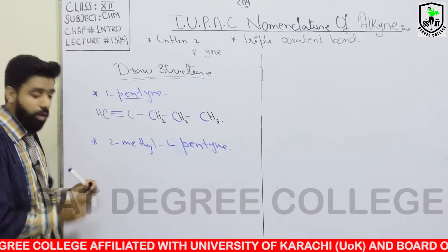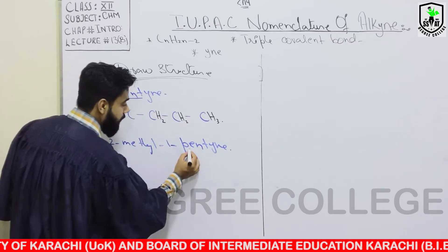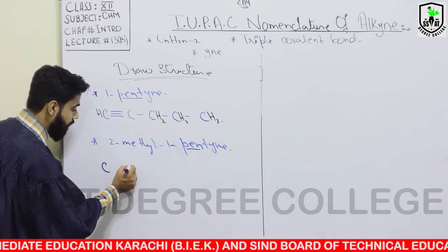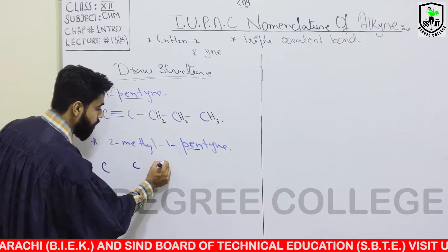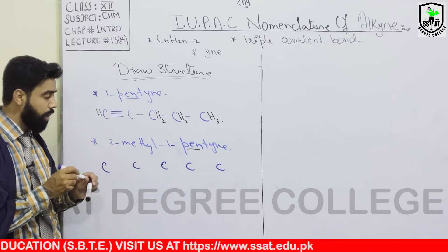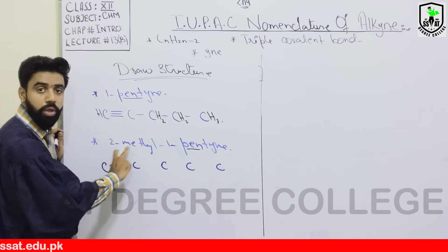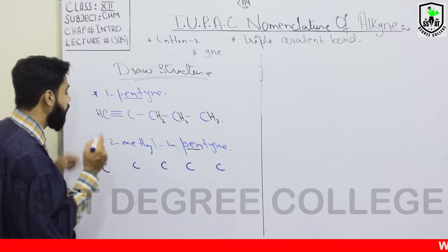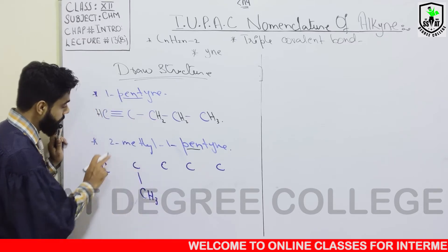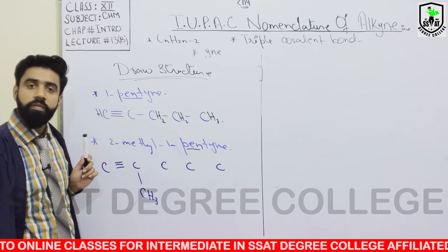Now the second example is 2-methyl-1-pentyne. The first step is to identify that pent means the total number of carbons is 5. So the first work is to draw 5 carbons: 1, 2, 3, 4, and 5. Then, the last step is the triple covalent bond at position 1.